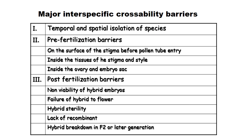The major interspecific crossability barriers are: first, temporal and spatial isolation of species; second, pre-fertilization barriers; and third, post-fertilization barriers. In pre-fertilization barriers, the major ones occur on the surface of the stigma before pollen tube entry, inside the stigma and style tissue, and inside the ovary and embryo sac. Post-fertilization barriers include non-viability of hybrid embryo, failure of hybrid to flower, hybrid sterility, lack of recombination, and hybrid breakdown in F2 or later generations.